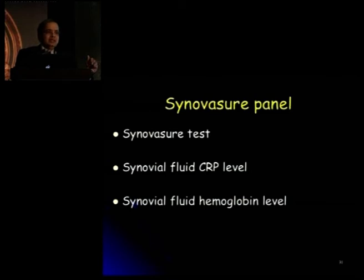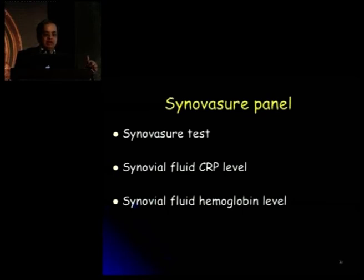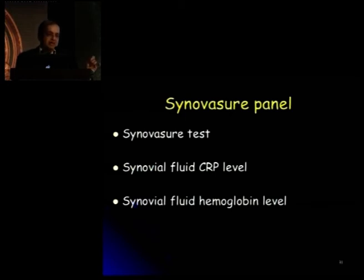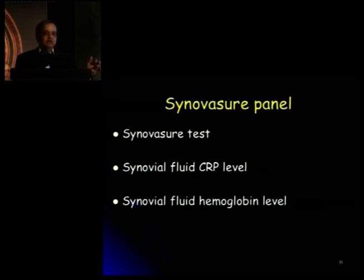In the U.S., they are offering what is called a Synovasure panel, which includes the Synovasure test itself. Since sensitivity was 96%, they are even trying to capture those 4% not being picked up by combining the Synovasure test with Synovasure fluid CRP level and Synovasure fluid hemoglobin level. The reason is that those 4% of patients being missed tend to be due to contamination of blood in the synovial fluid — by taking these two additional elements into account, they can achieve a much higher predictive value, aiming for close to 100% sensitivity. This is being offered in the U.S. and Western world today.